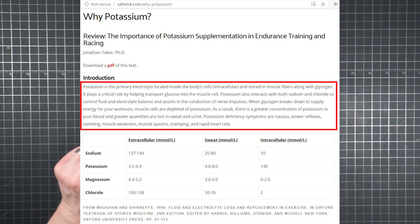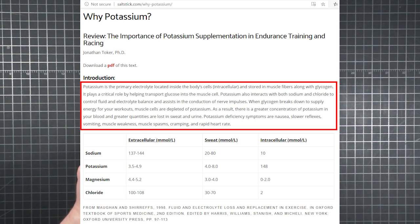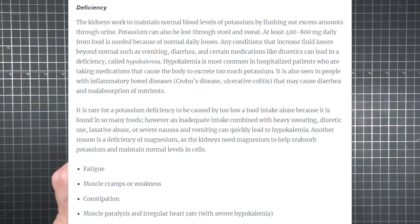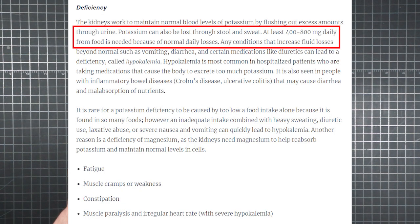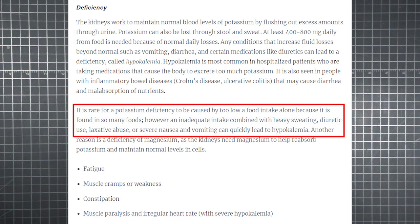And when glycogen breaks down to supply energy for your workouts, muscle cells are depleted of potassium. Well, all this extra potassium in the blood means more loss when you sweat. The Harvard notes that you need up to 800 milligrams daily to replace normal losses, and it's rare for potassium deficiency to be caused by too low a food intake alone because it's found in so many foods.